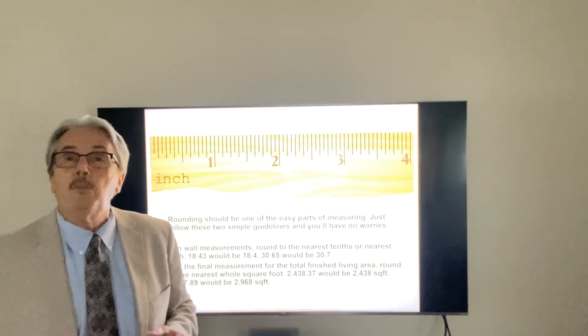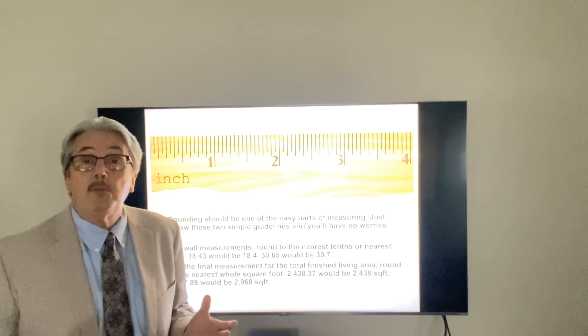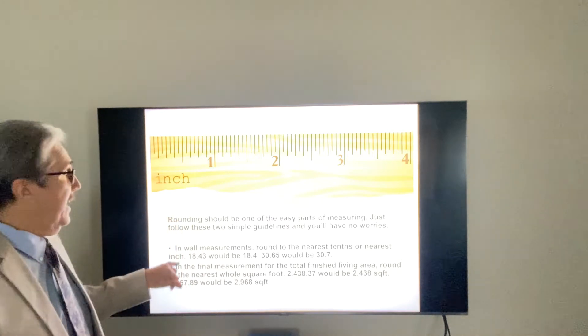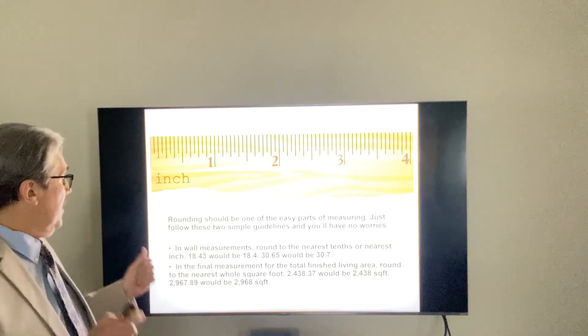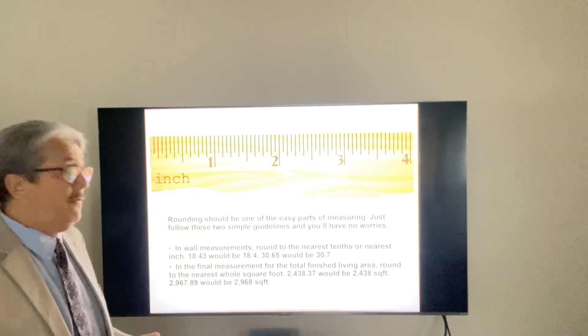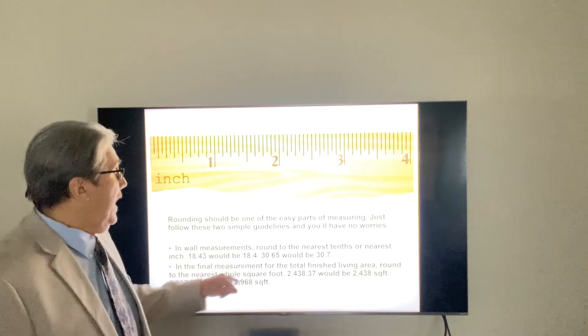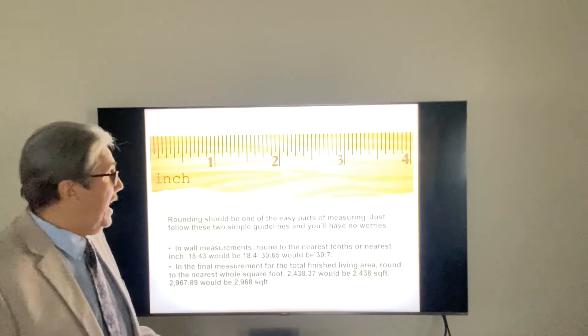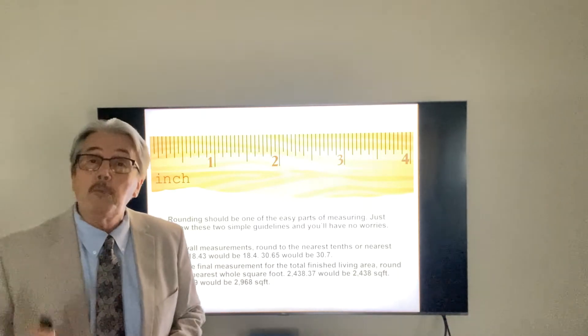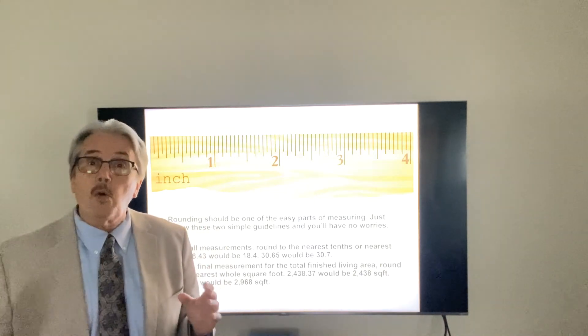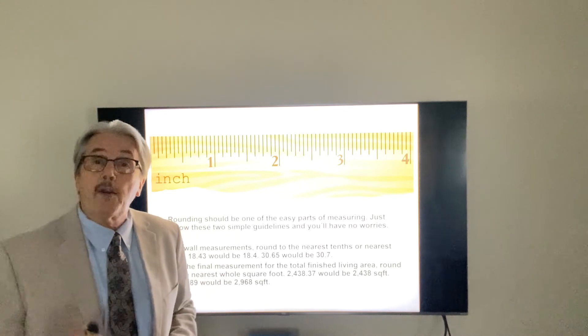Rounding really should be one of the easiest parts of the job, and there's only two things you really got to think about here. Now, when you're doing your wall measurements, the exterior measurements around the house, like 18.43, well, you might put that in your software as 18.4. If it's 30.65, that's going to be 30.7. But when you get to the final measurement, the total square footage, that's when you're going to round it to the nearest whole square foot.